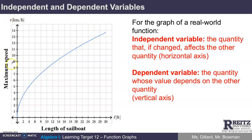So here is a function graph. This is a real-world function graph. The real-world function graph will always compare two quantities that are related to one another in some way. In this function graph, one of the quantities being compared is the length of a sailboat. The other quantity is the maximum speed. We know this is a function because every length of a sailboat has only one maximum speed.